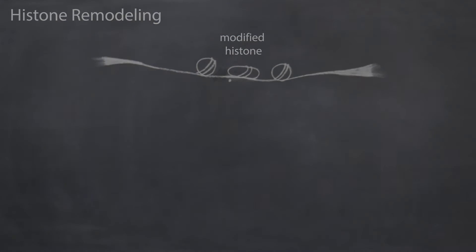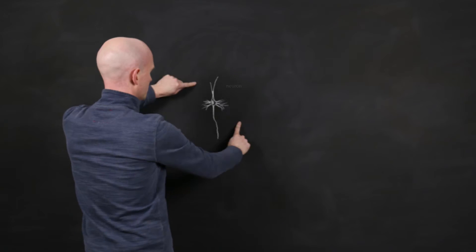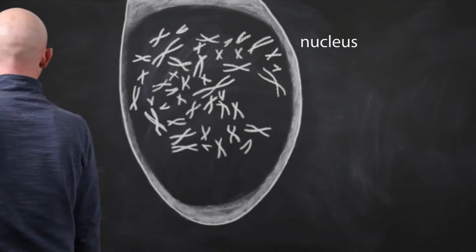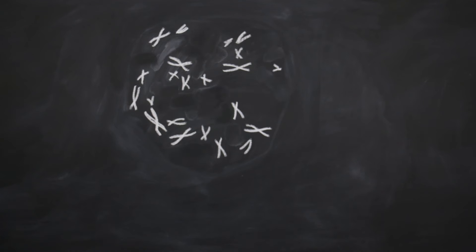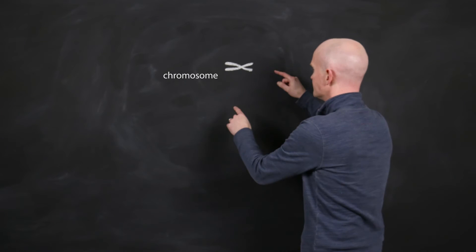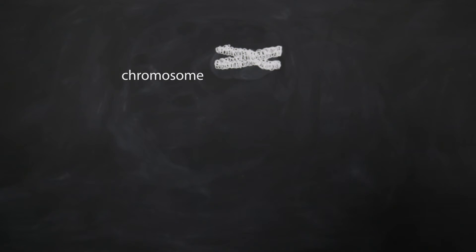To understand these two epigenetic mechanisms, let's begin by locating the DNA in a cell. The chromosomes are located in the nucleus of the cell. Let's isolate a single chromosome. DNA is tightly wound up in a chromosome.